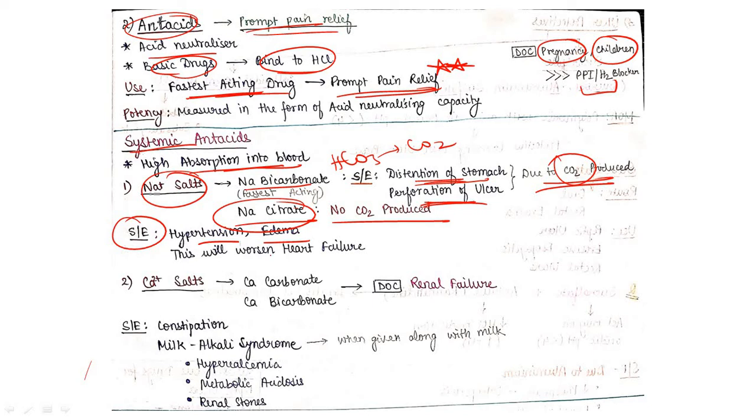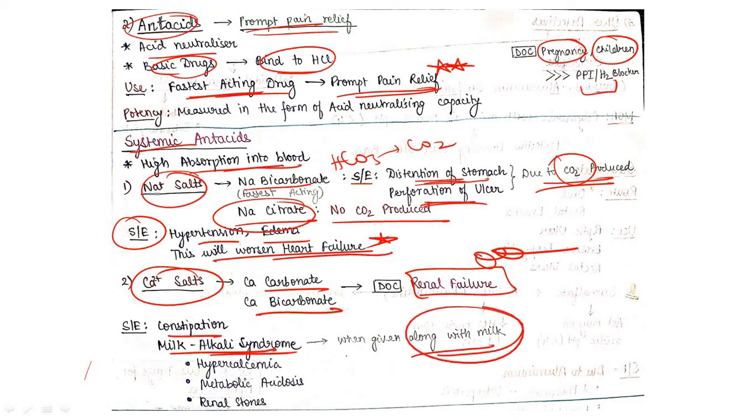Second is your calcium salt - calcium carbonate and calcium bicarbonate. They are the drug of choice in renal failure. Drug of choice for renal failure are calcium salts. Side effects: constipation and milk-alkali syndrome when given along with milk. They will cause hypercalcemia, metabolic alkalosis, and renal stone formation.